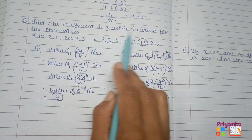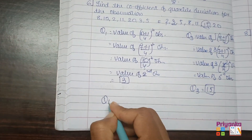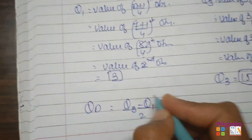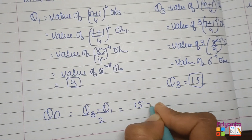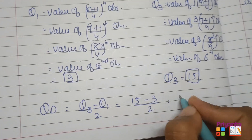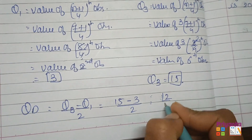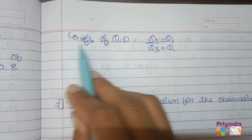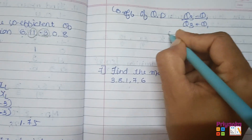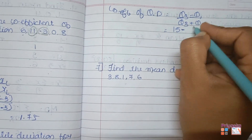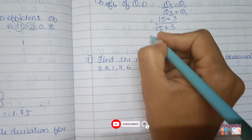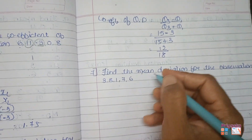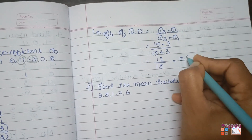Now finding the coefficient of quartile deviation. First, quartile deviation = (Q3 - Q1) / 2 = (15 - 3) / 2 = 12 / 2 = 6. But the question asks for the coefficient of quartile deviation: (Q3 - Q1) / (Q3 + Q1) = (15 - 3) / (15 + 3) = 12 / 18 = 0.67.